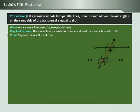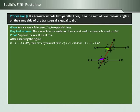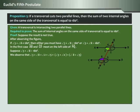Proof: Suppose the result is not true. Observing the figure, if angle three plus angle eight is not equal to 180 degrees, then either angle three plus angle eight is less than 180 degrees, or angle three plus angle eight is greater than 180 degrees. In the first case, AB and CD meet on the left side of PQ.